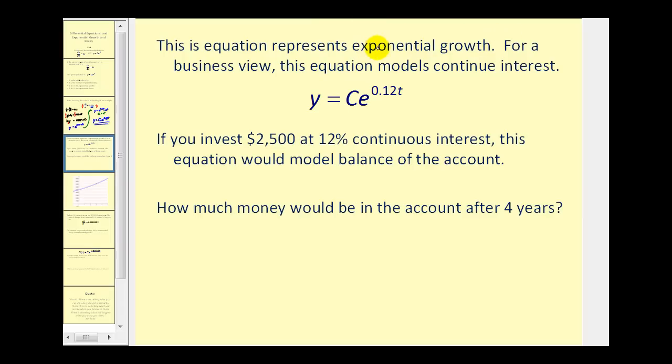For a business view, this equation models continuous interest where 0.12 represents the rate of continuous interest, t is the time in years, and C would be the initial investment. So if you invest $2,500 at 12% continuous interest, this equation would model the balance of the account. How much money would be in the account after four years?